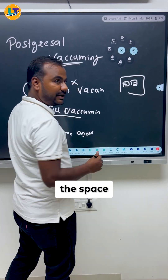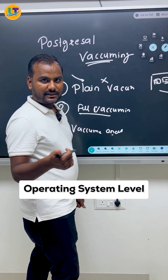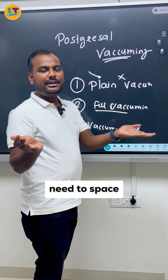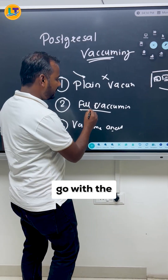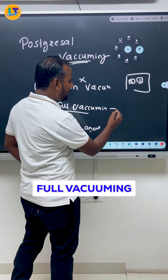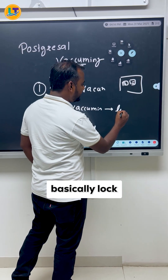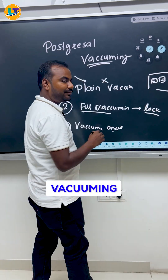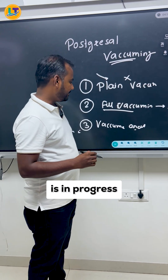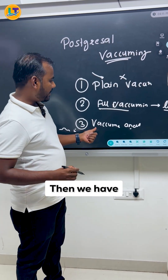When you do full vacuuming, it will release the space from your operating system level. When you need space at the operating system level, go with full vacuuming, but this will lock your table while the vacuuming is in progress.